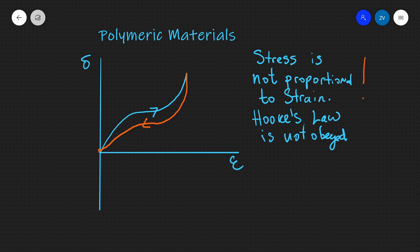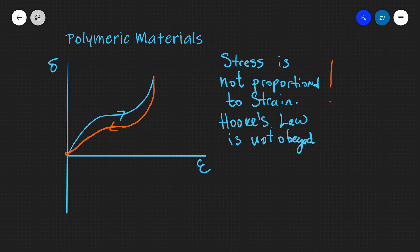Interestingly, if we remove the force — that is, unload the material — the stress against strain curve follows a different path back, shown here as the red curve. The material does return to its original shape, but stress is not proportional to strain throughout the process.